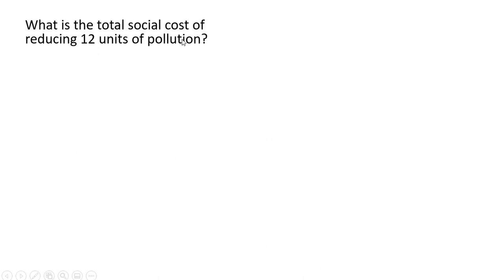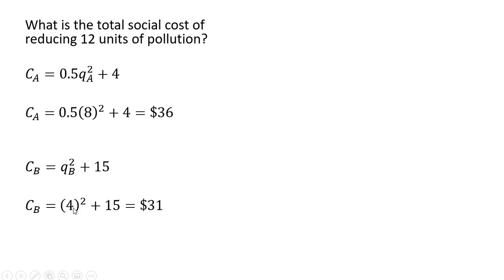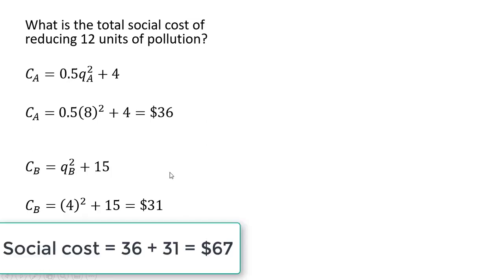What is the total social cost of reducing 12 units of pollution? Evaluating firm A's cost equation at eight units gives $36, and evaluating firm B's total cost equation at four units gives $31. Adding those up gives us the total social cost of reducing 12 units of pollution.